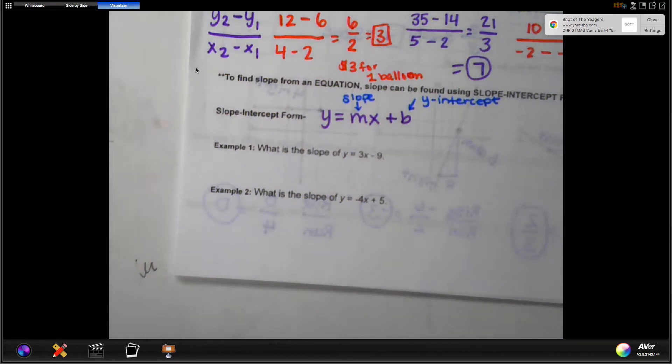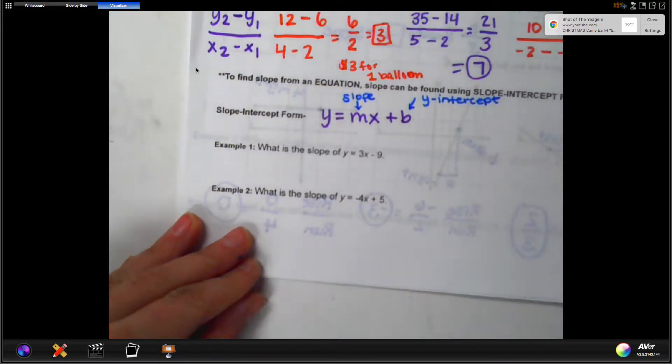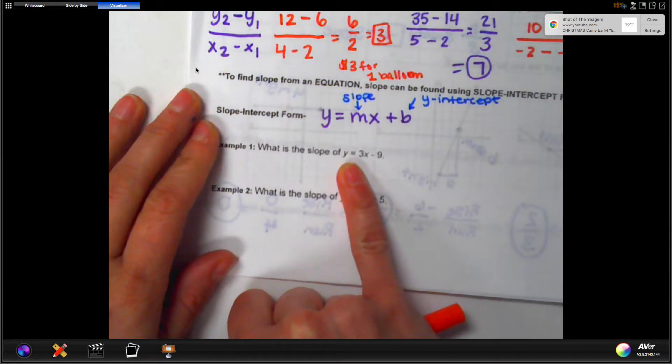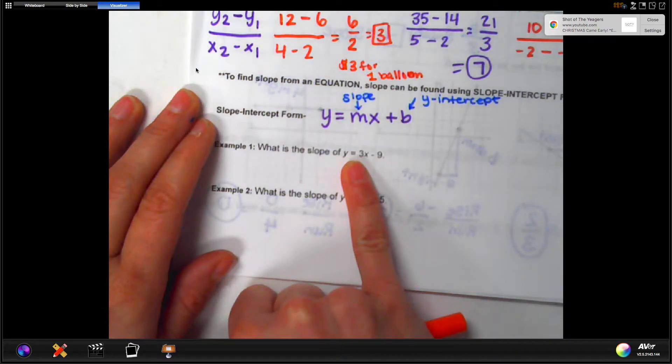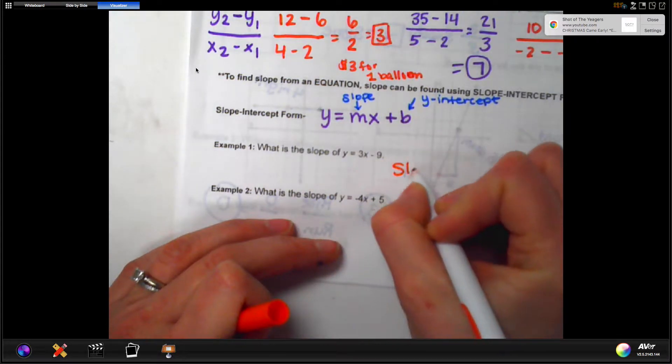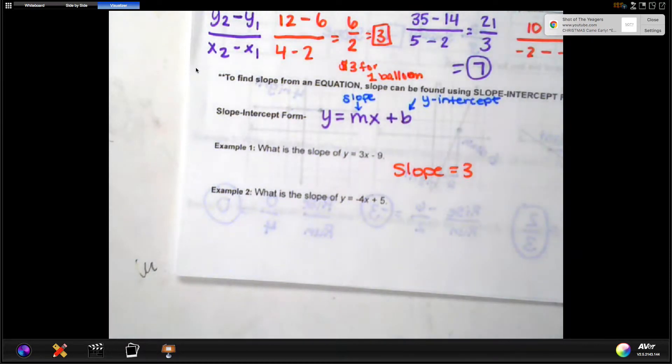So the nice thing is if it's already in this format, there's really no work to be done. You simply look for the number next to x. So, y equals 3x minus 9. Since the 3 is next to the x and the y is alone on the left side, we can simply say the slope equals 3, because it's the one next to x and y is alone.